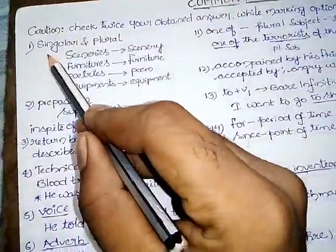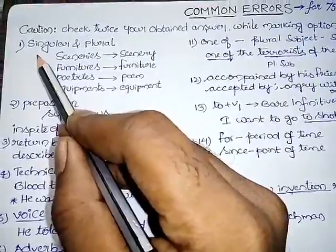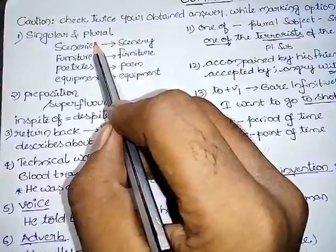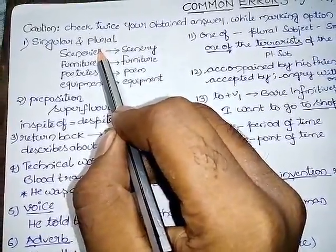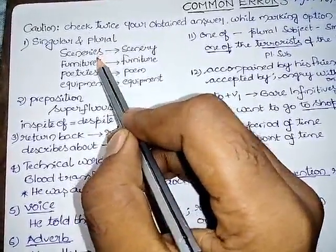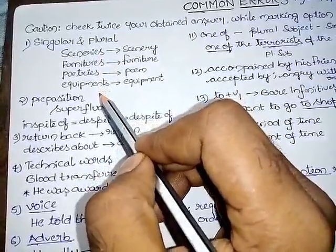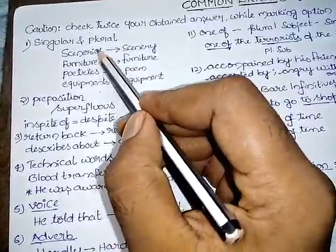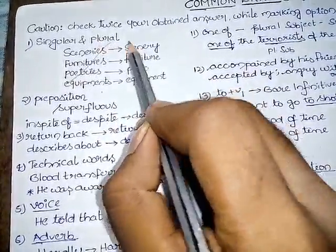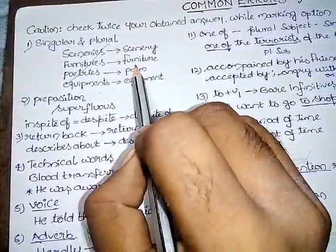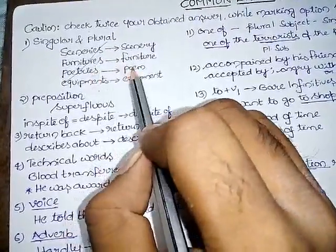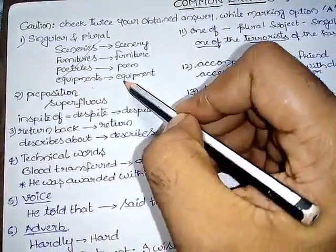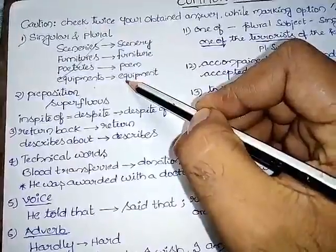The possibility of giving errors in common errors is in the form of singulars and plurals. You have gone to the practice papers, you find sceneries, furnitures, poetry, equipments. All these forms do not have plural forms, these are always singular. So for sceneries, there should be scenery, for furnitures it should be furniture, for poetries it is poem, and equipments is equipment. This is one point where there is a chance of giving error.